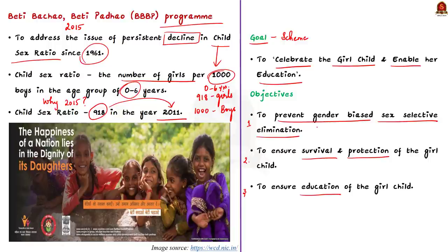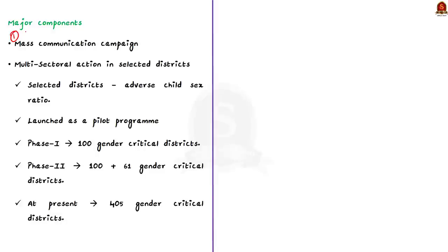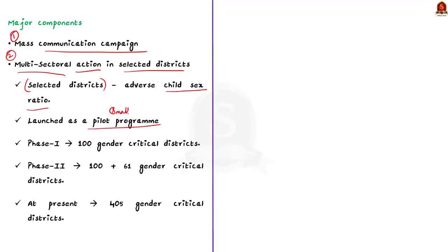The scheme has two major components: a mass communication campaign and multi-sectoral action in selected districts with adverse child sex ratio, launched as a pilot program. In the first phase (2014–2015) there were 100 gender-critical districts, with 61 additional districts in the second phase (2015–2016). At present the scheme covers a total of 405 gender-critical districts.